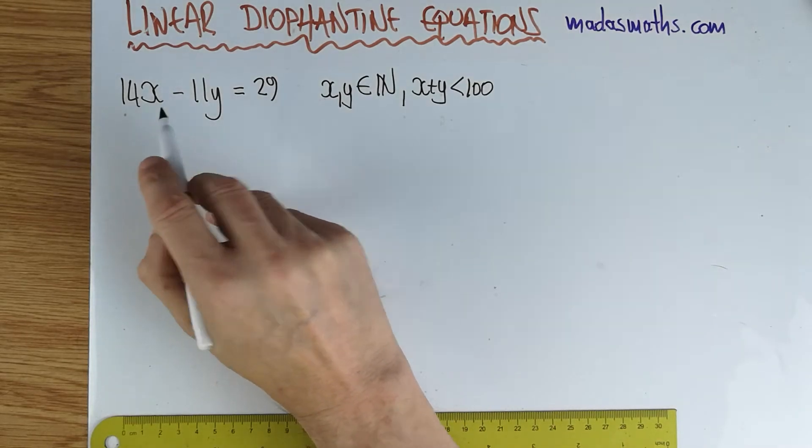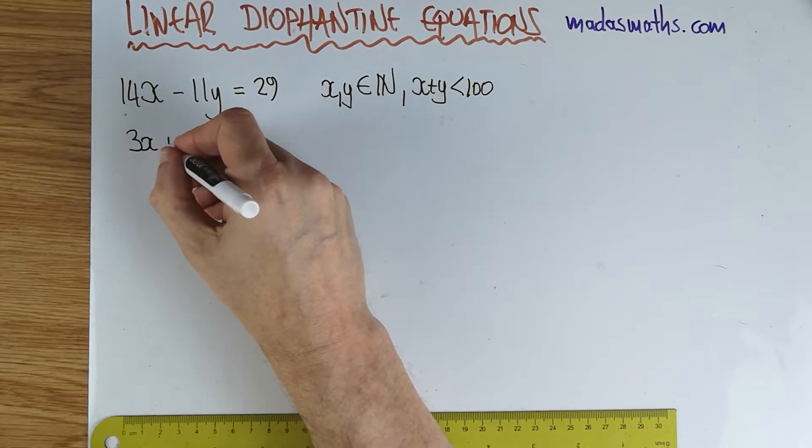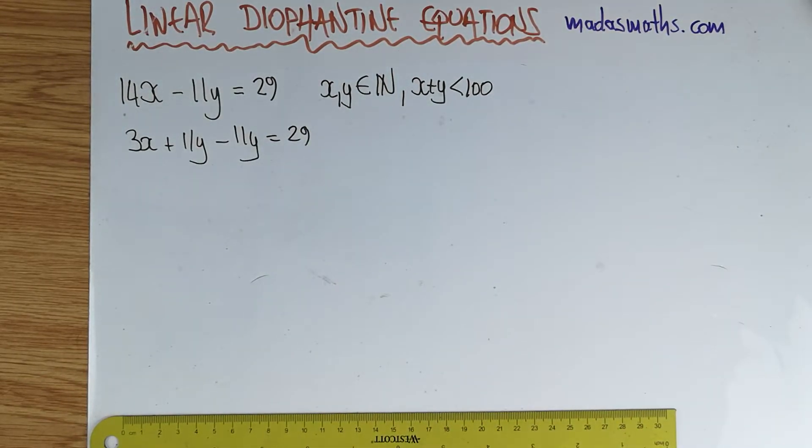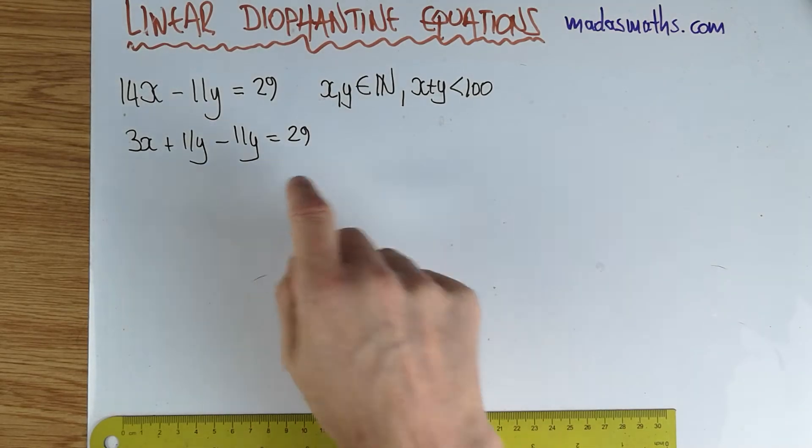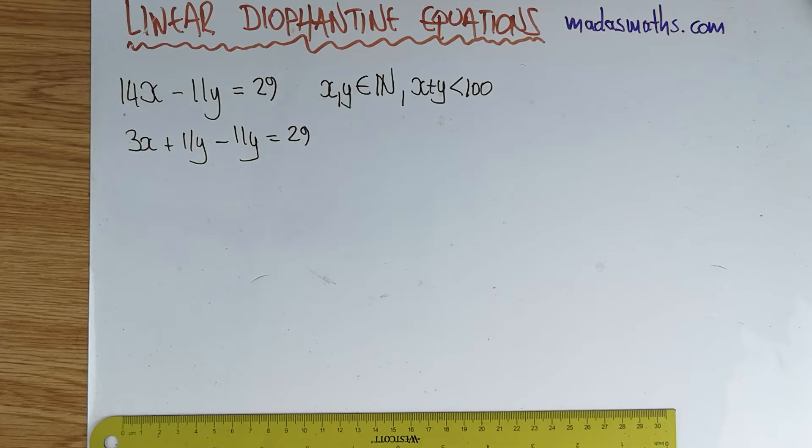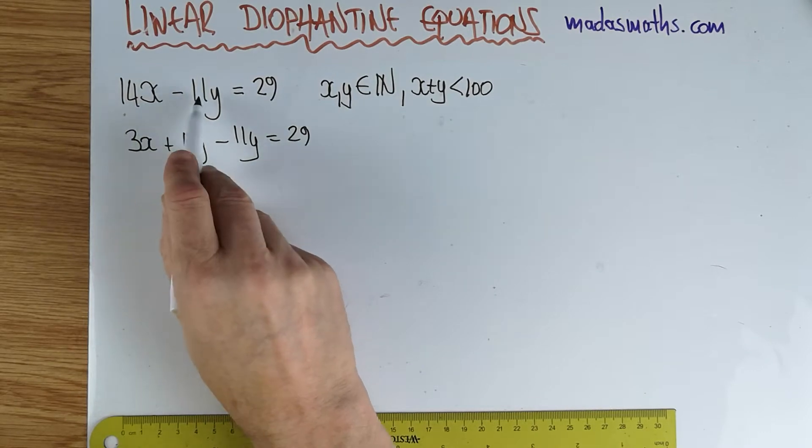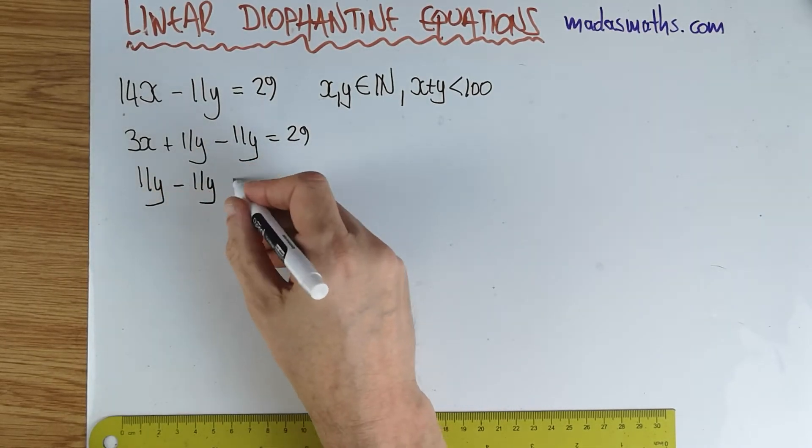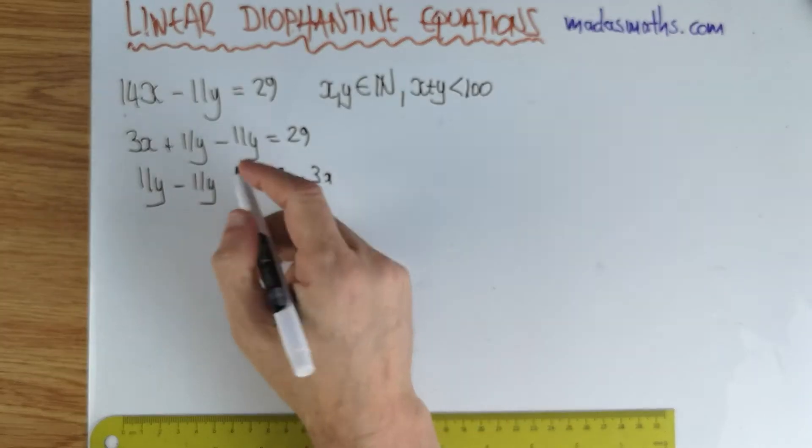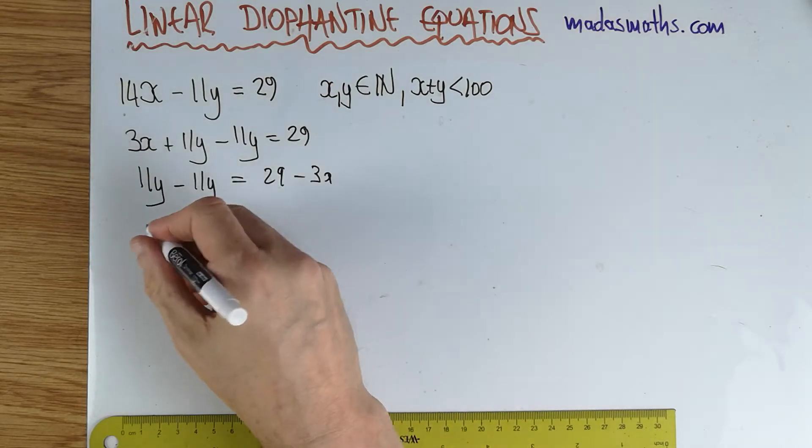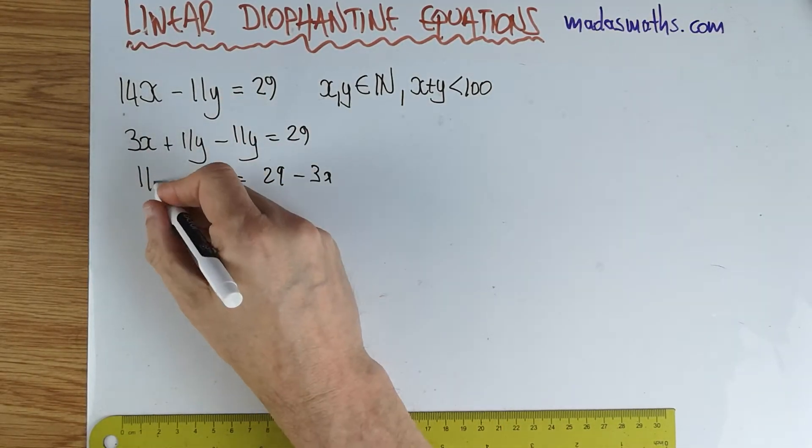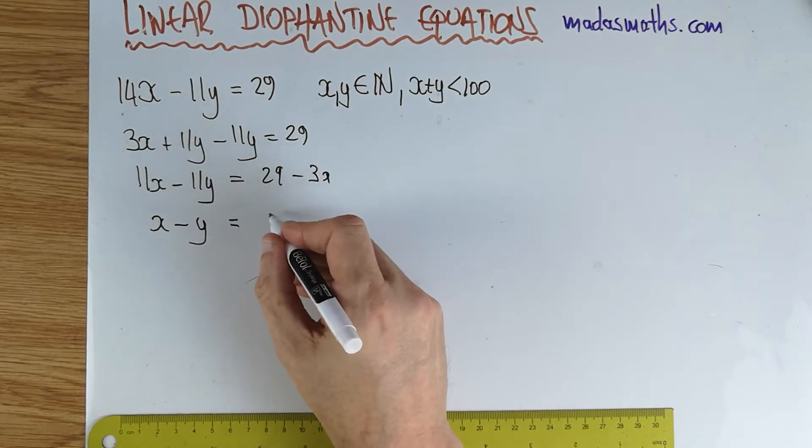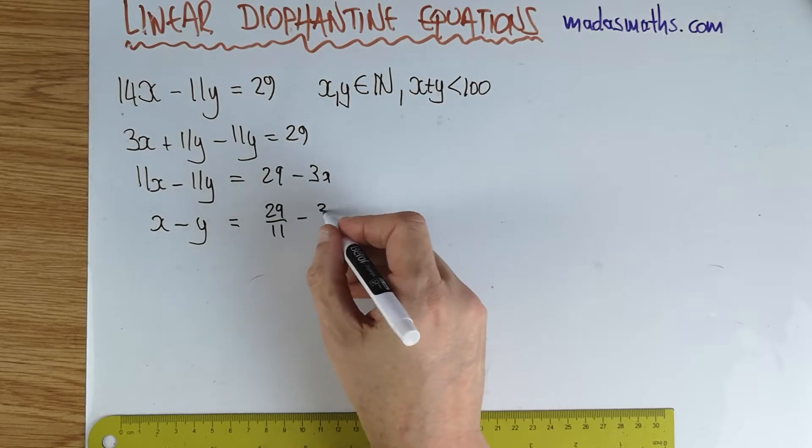This is the method for something like this. First of all, you want to make the coefficients of x and y equal. And the way you do that, you write it as 3x plus 11y minus 11y is equal to 29. I can write this as 11x minus y equals 29 minus 3x, and then of course both sides have 11. And then I can divide by 11.